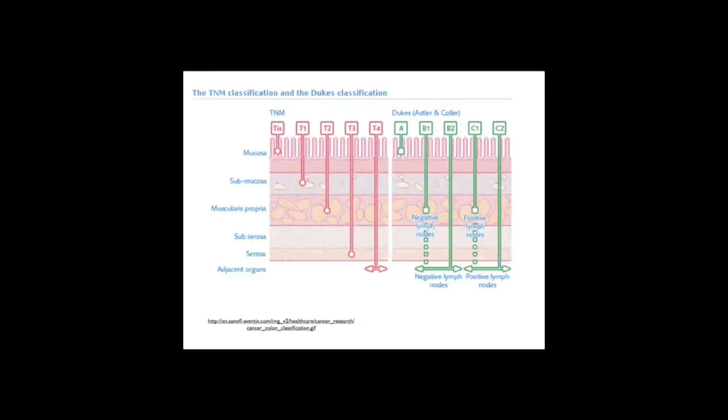A picture showing both the TNM and the Dukes classification illustrates an important point: a Dukes grade B may also correspond to TNM grade T4, which is serious as the tumour has spread throughout and into adjacent organs.